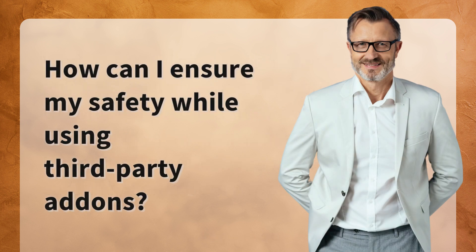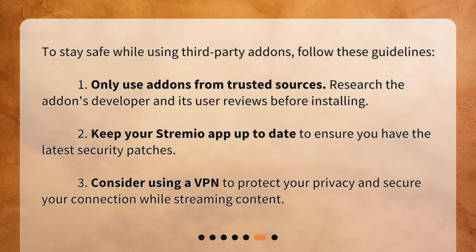How can I ensure my safety while using third-party add-ons? To stay safe while using third-party add-ons, follow these guidelines: 1. Only use add-ons from trusted sources. 2. Research the add-on's developer and its user reviews before installing. 3. Keep your Streamio app up to date to ensure you have the latest security patches. 4. Consider using a VPN to protect your privacy and secure your connection while streaming content.